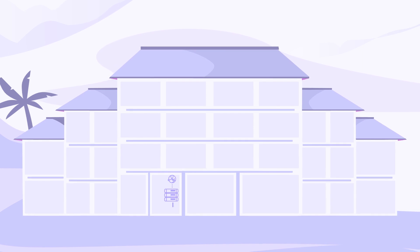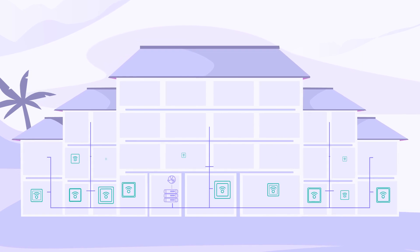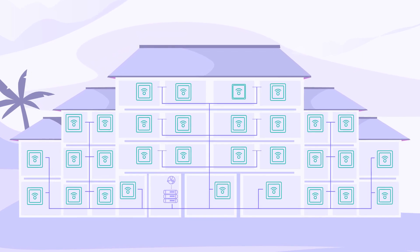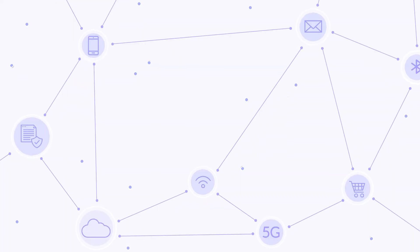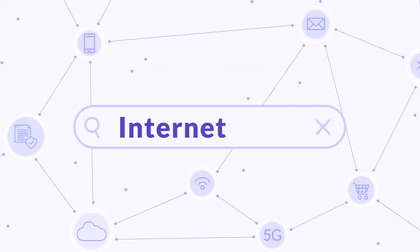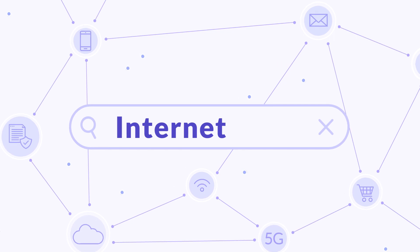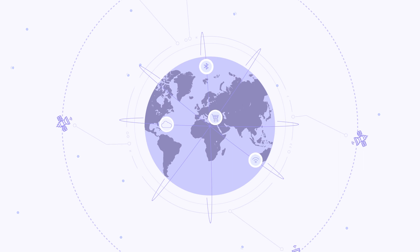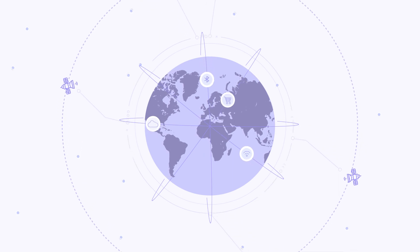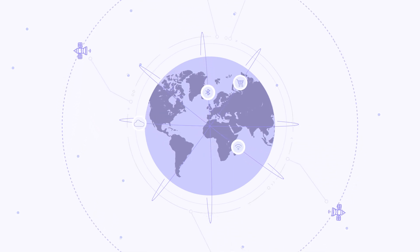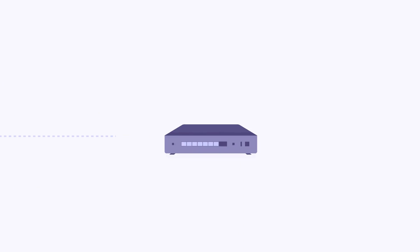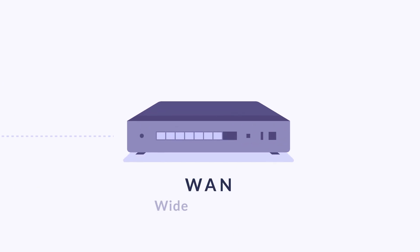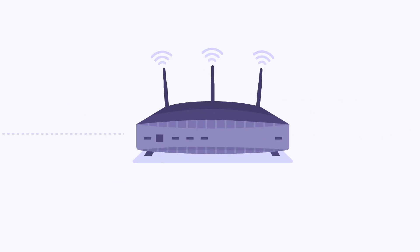So, which is the root of the problem? First, let's take a look at how the Wi-Fi network that provides guests with the internet works. The internet can be defined as a huge global network that allows the exchange of information between users. Our internet provider is responsible for giving us access to it, but for that we need a device that allows us to receive and send this information: the WAN router. The WAN router is linked to another local area device that manages our hotel's internal networks — the LAN router.